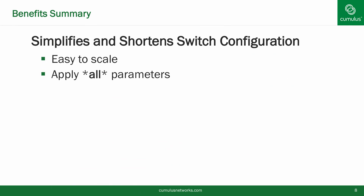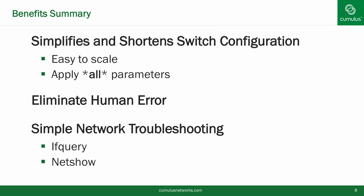So in summary, Cumulus Linux provides the benefit of allowing scripts right in the config as a core feature. This allows for far shorter configurations, even when the interface configurations cannot be the same. If the configurations do happen to be the same, we can also configure ranges or globs. This also helps eliminate human error by not requiring any cut and paste or manual intervention. The entire configuration can be automated, even without any external automation tools. Finally, we provide simple troubleshooting techniques using commands like ifquery and Netshow. All of these features together provide for simpler operations, one of the many benefits of running Cumulus in your data center. Thank you for watching and have a great day.